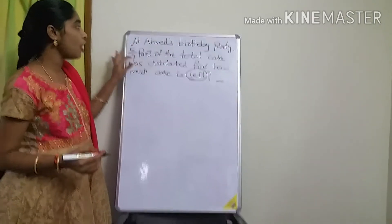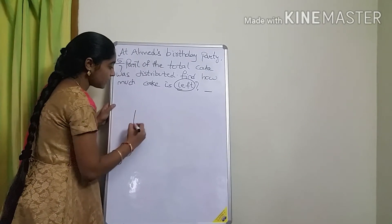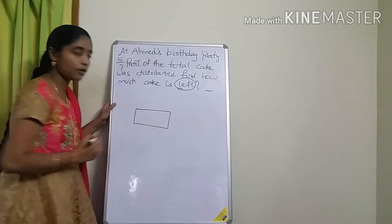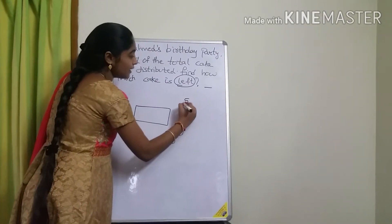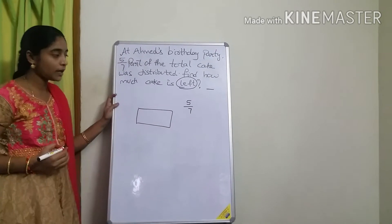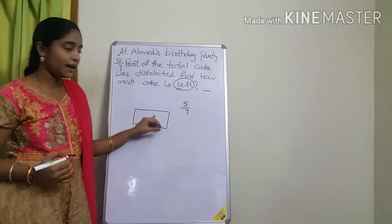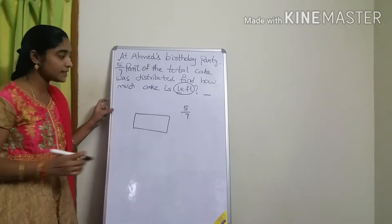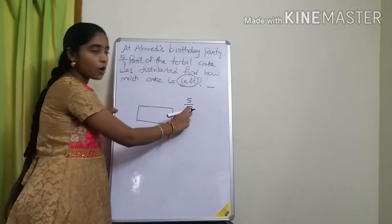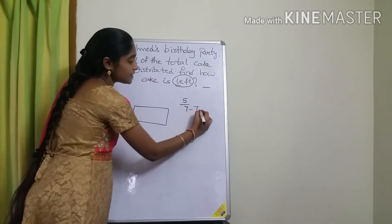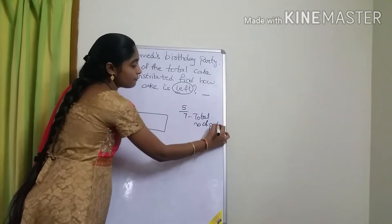At Ahmad's birthday party, how much cake was distributed? 5/7. Actually, how much total cake is there? One cake. They gave the fraction 5/7. The denominator mentions the total number of parts — that is the total number of parts.